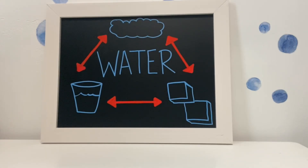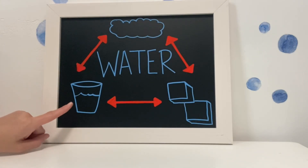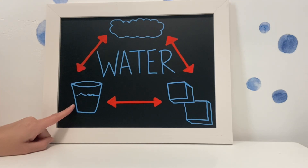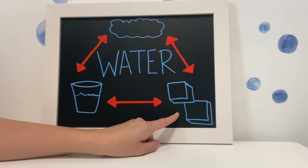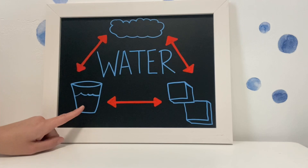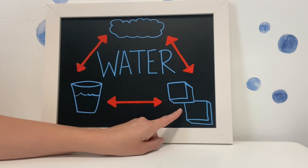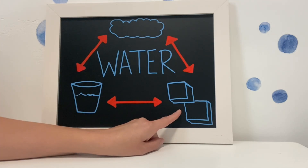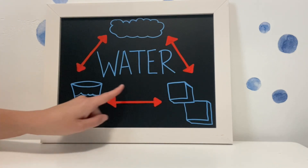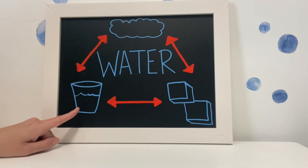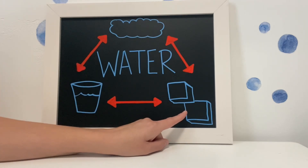Okay friends, so you can see I have a glass of water here on my chalkboard, and I'm sure all of you have had a glass of water before. This is called the liquid form of water. And if you go across, these are ice cubes. I'm sure all of you have had ice cubes in your glass of water before. This is called the solid state of water. So we have the liquid state of water and the solid state of water.